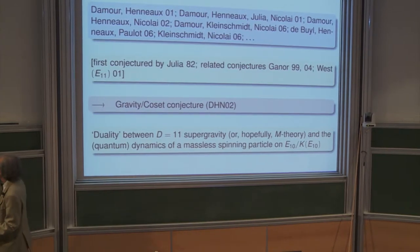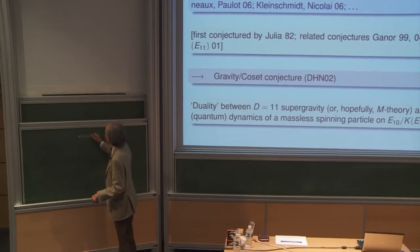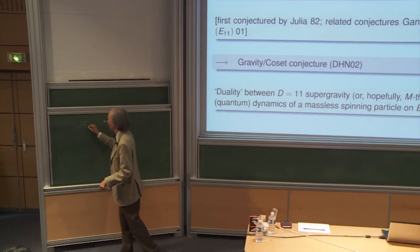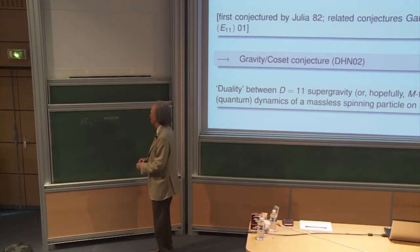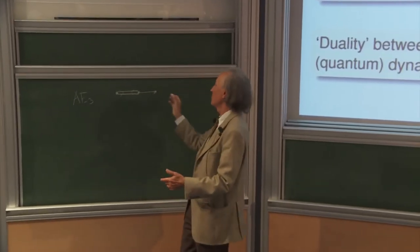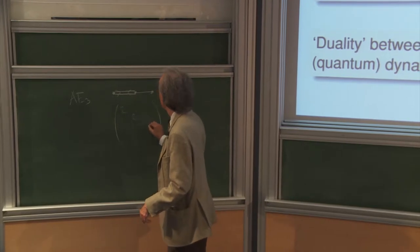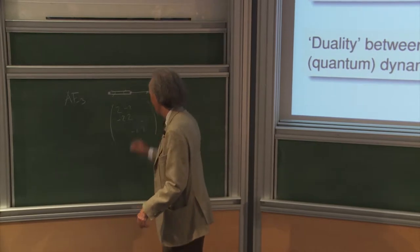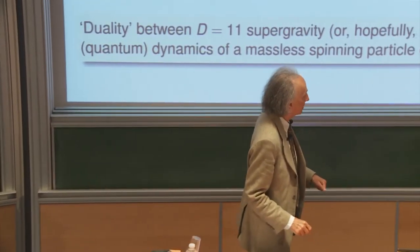But today most of my talk will be linked to a baby version of E10, called by Victor AE3. This is the hyperbolic version of SL2, which has a Dynkin diagram of a specific type, meaning it has a Cartan matrix of the form: diagonal entries 2, off-diagonal entries minus 1, and 0 elsewhere. This is mostly the object I will be talking about.